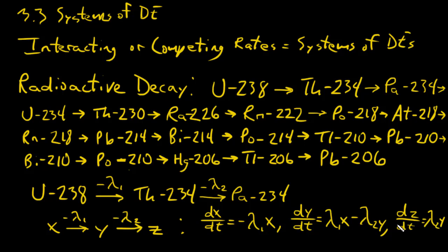Each element in the full uranium decay chain follows this pattern: thorium gains λ₁ times the uranium amount, loses λ₂ times itself; protactinium gains λ₂ times thorium, loses λ₃ times itself; and so forth down to lead-206, which just gains λ_n times thallium. That's how the system works. Now we'll move on to a slightly more complicated example.